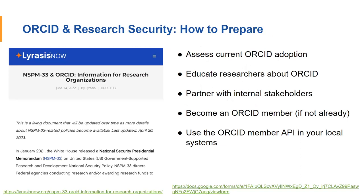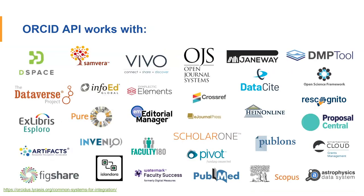Any time you can educate your researchers about ORCID is a good time — it's never too early or too late. Any time you can talk to other internal stakeholders, such as people in the research office and sponsored programs — and become an institutional ORCID member if you're not already. Once you're a member, use the ORCID API in your local systems. You can read data from your researchers' ORCID records and help them by writing data to their ORCID records that they can use when they go to apply for funding. There's a growing number of software systems that are integrated with or ORCID-enabled, and we're hoping to see more of this.